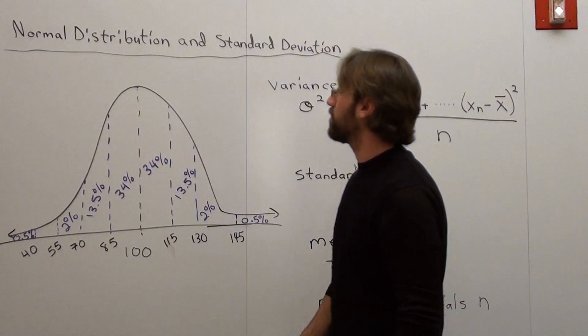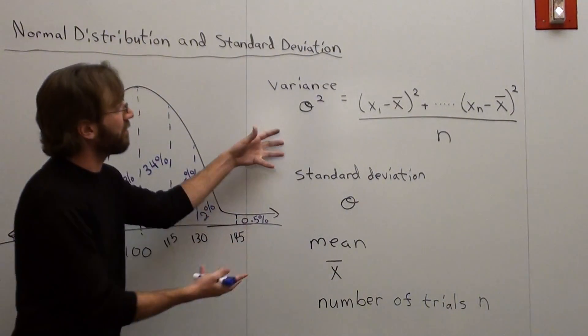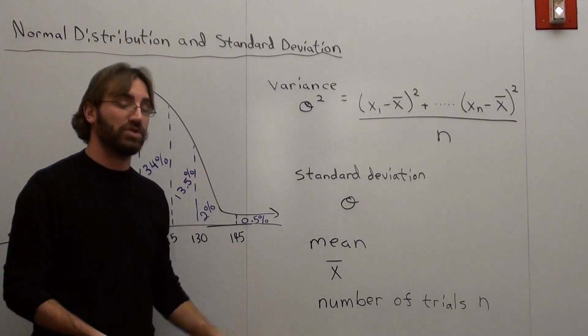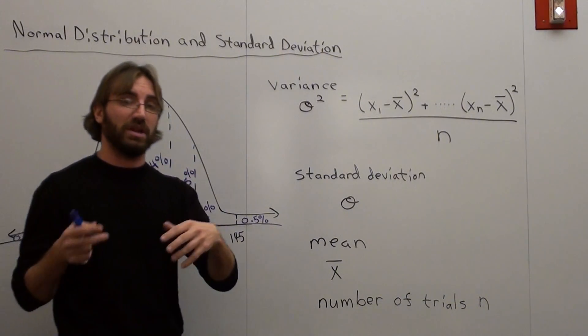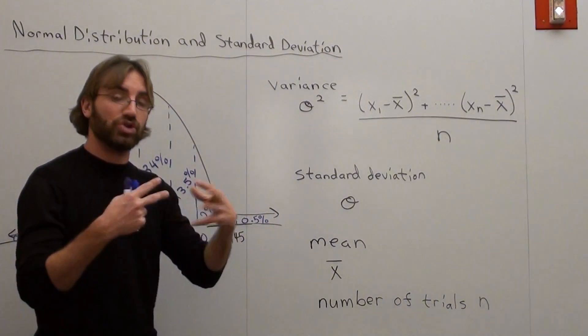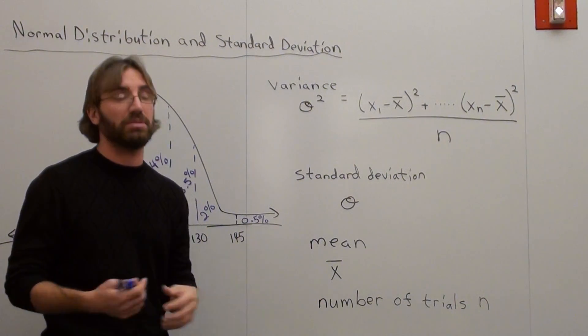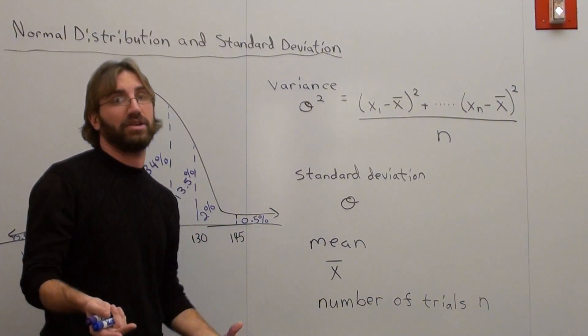So that's a normal distribution. What we're going to do is relate it to variance, standard deviation, mean, and number of trials. I'm going to give you an example. What I have to preface before the next lesson is the more trials you have, the more accurate your data is going to be. The less trials you have, the less accurate your data is going to be.